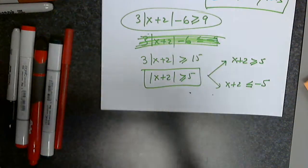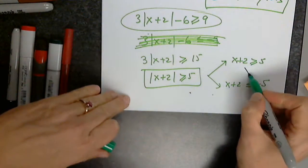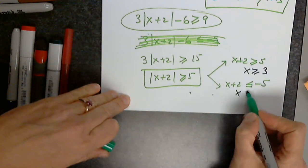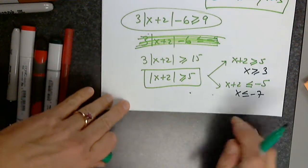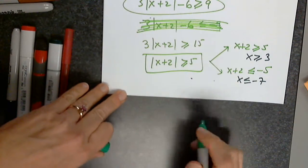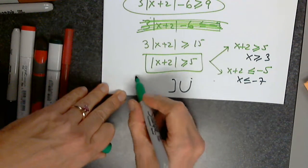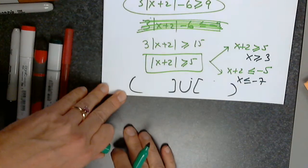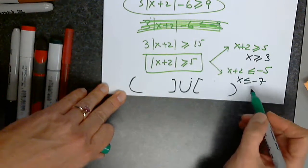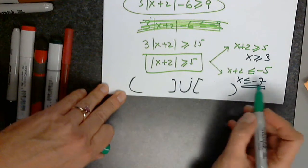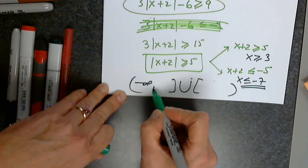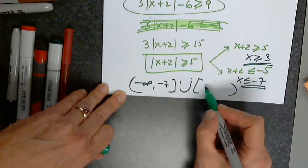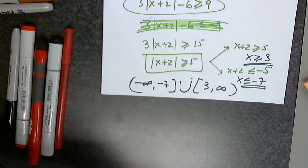So from here, I have x greater than or equal to negative 7, and I have to have the union in between. I have to put this first, from negative infinity to negative 7, and then this, from 3 to infinity.